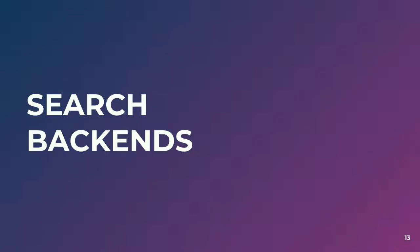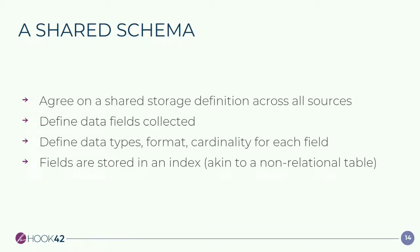Let's dive right into search backends. The first thing to really understand about a search backend is you need some uniformity — you need a shared schema. If you're going and looking at multiple websites and you're trying to get elements, you need to understand what it is that you are getting from those sites. So you need to agree on a shared definition that is standard across all of those sources. That definition should have the associated fields and data types — like a shorter string, a big block of HTML, or an image. Don't forget about cardinality, because HTML can have more than one heading on a page.